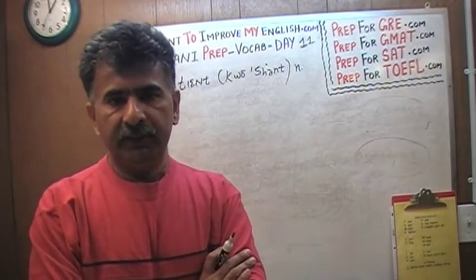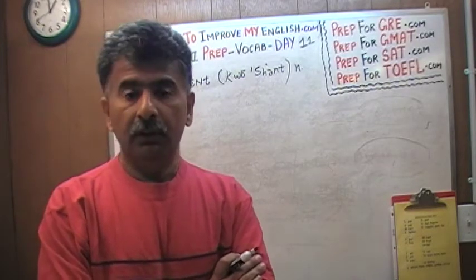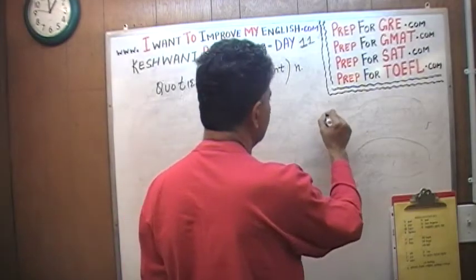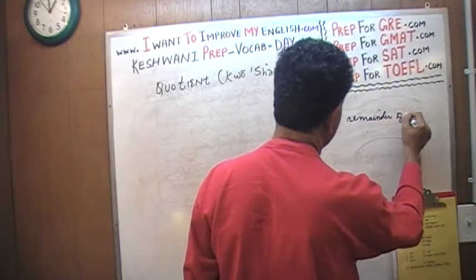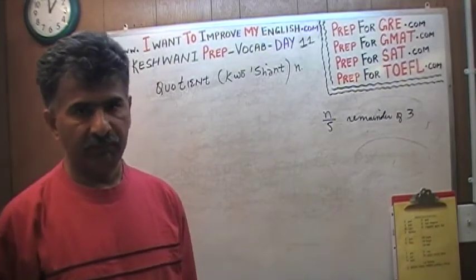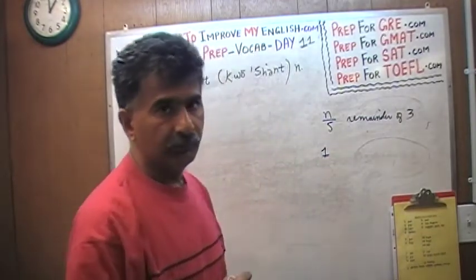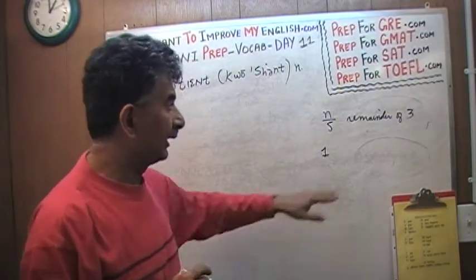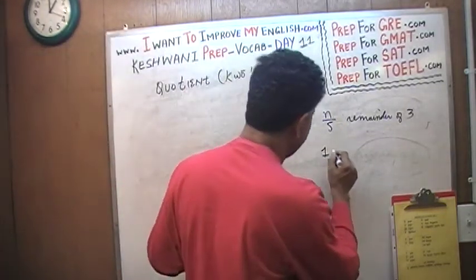If you ask somebody to give you a number so that when you divide it by 5 you get a remainder of 3, there are many such numbers. But what I hear sometimes from people who confuse the concept of remainder with the concept of quotient is that there exists only one number, and the number they come up with is 15.